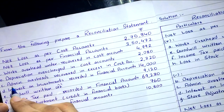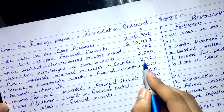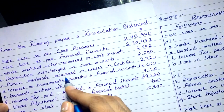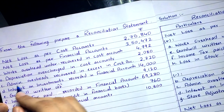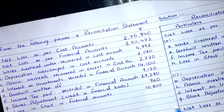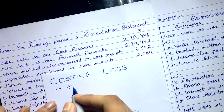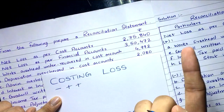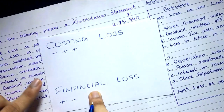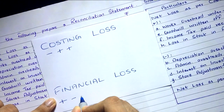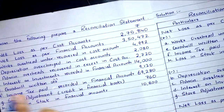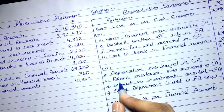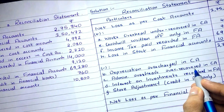Transaction C: administrative overheads recovered in excess in cost accounts — 2,720. Overhead means expense; recovered in excess means recorded more. Expense recorded more means costing loss is more — positive relationship. Effect on financial loss is exactly opposite — minus. So this transaction has to be subtracted. Admin overheads over-recovered in cost accounts: 2,720.